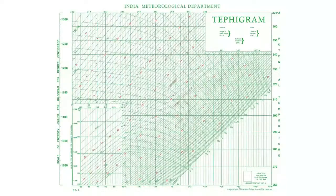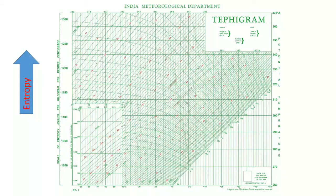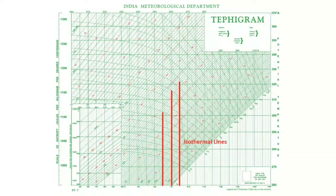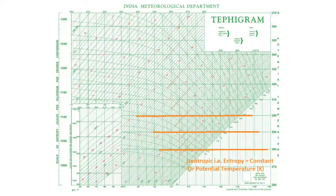What do the different curves represent in a tephigram? The Y-axis shows entropy in joules per kilogram per degree centigrade, and the abscissa represents temperature in degree centigrade. Vertical lines show isothermals, where temperature remains constant. Horizontal lines represent constant entropy and the potential temperature of an air parcel.